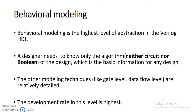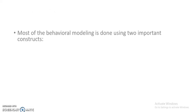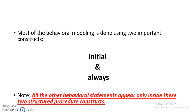The development rate in behavioral modeling is the highest — we will see this later with examples. Whenever we write design modules using behavioral modeling, the two most important constructs are the initial and always blocks. All other behavioral statements will appear only inside either the initial or the always procedural constructs.